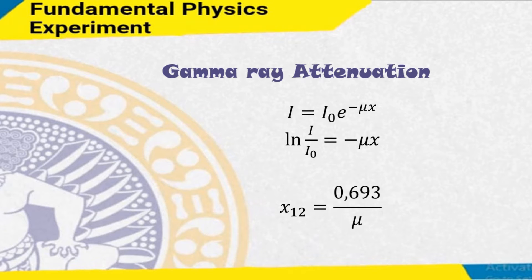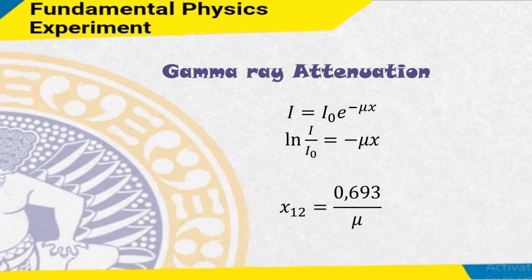The interaction between gamma rays and the material causes an exponential decrease in the intensity of the rays. According to the formula, I equals I0 times exponential minus mu x, where I0 is the initial intensity of the gamma rays incident on the surface of the material, and I is the intensity of the rays that have passed through the material of thickness x.